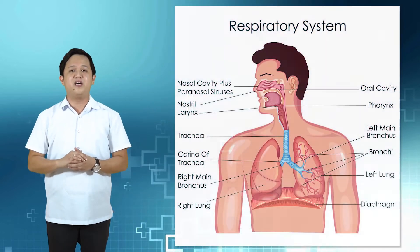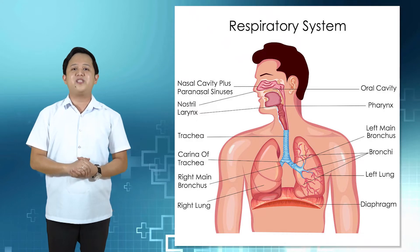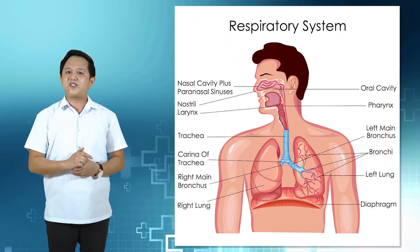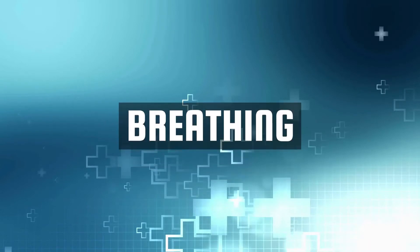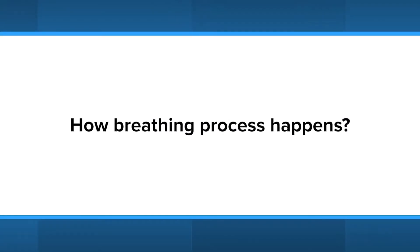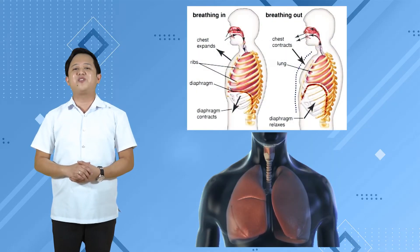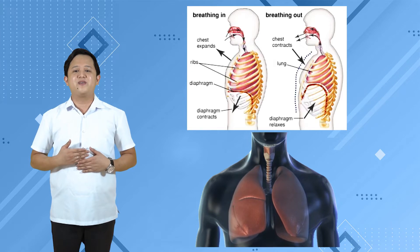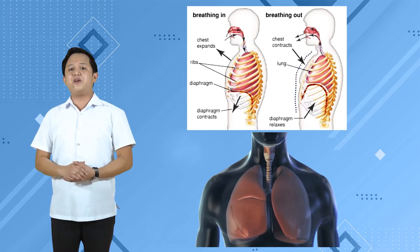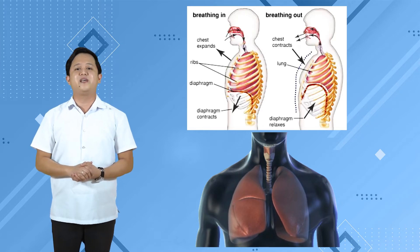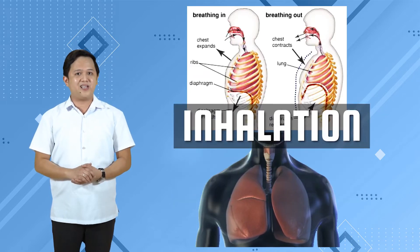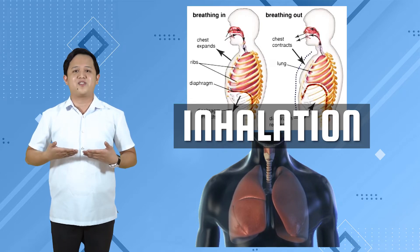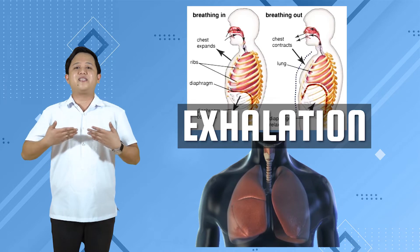The primary function of the respiratory system is to supply the blood with oxygen and to deliver oxygen-rich blood to all parts of the body. The first step is the process called breathing. Breathing is the process of drawing air into the lungs, called inhalation, and its expulsion, called exhalation. During inhalation, oxygen enters the lungs; during exhalation, carbon dioxide exits the lungs.